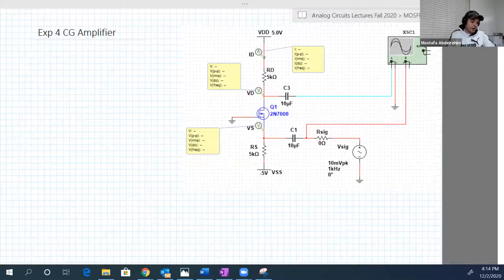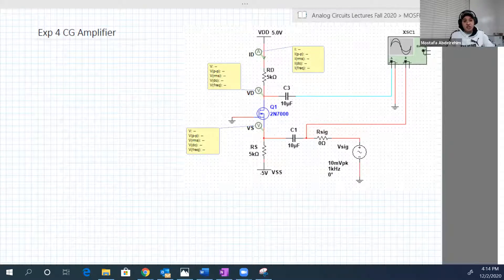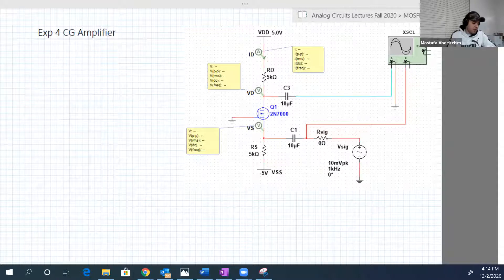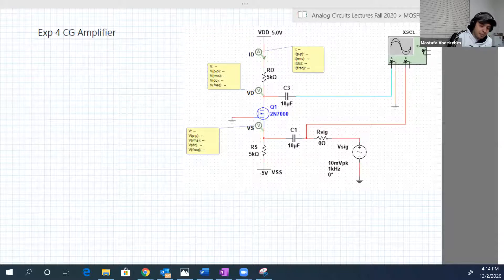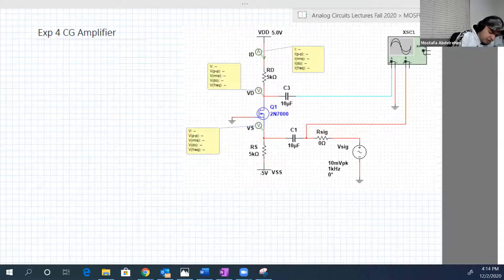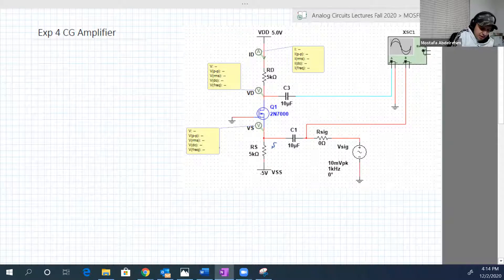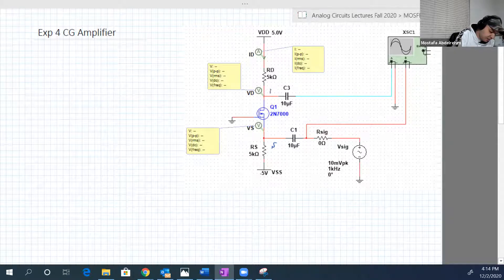Hi guys, welcome back to Lab 10, the last session, Part 4, which is experimenting with common gate amplifier. Here is the circuit that we're going to use in that lab. The input here is at the source and the output is at the drain, and the gate is just common between them.